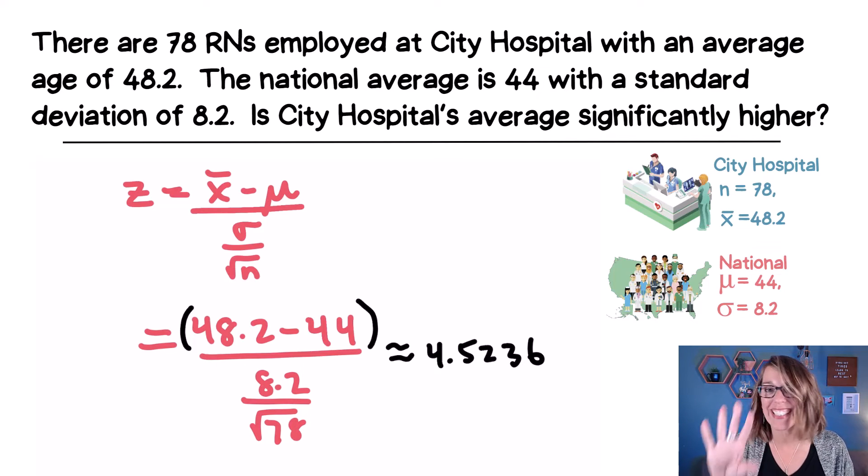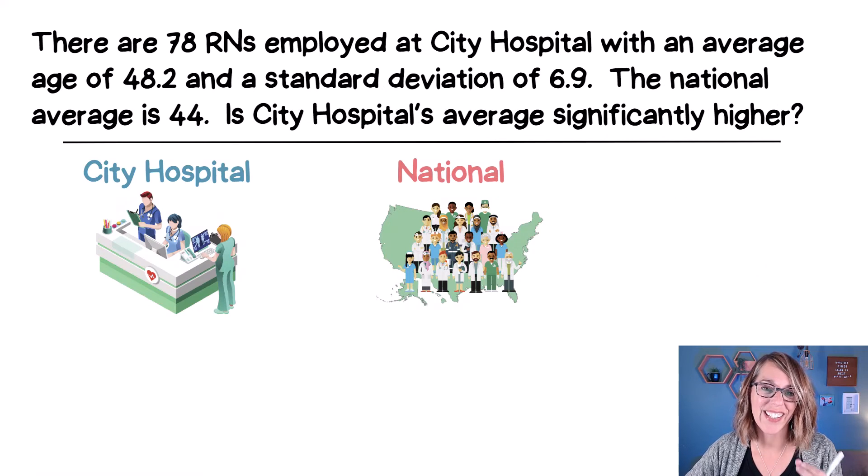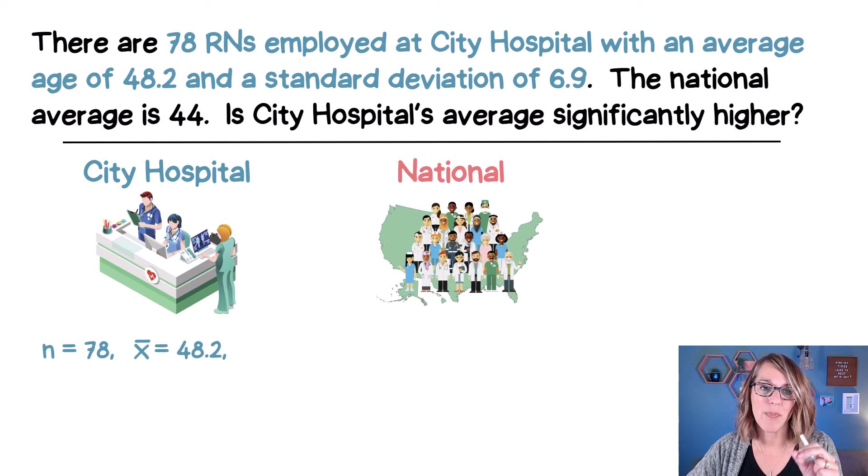Let's take a look at this next slightly altered example. Now I've changed this example just a little bit. Now for City Hospital, I know the average age and the standard deviation, but the City Hospital is the sample. So I'm going to represent that as an S. So S, our sample standard deviation is 6.9.